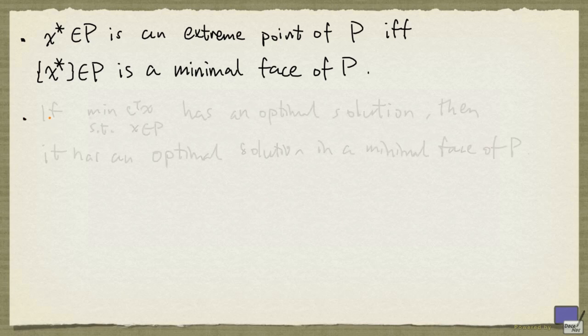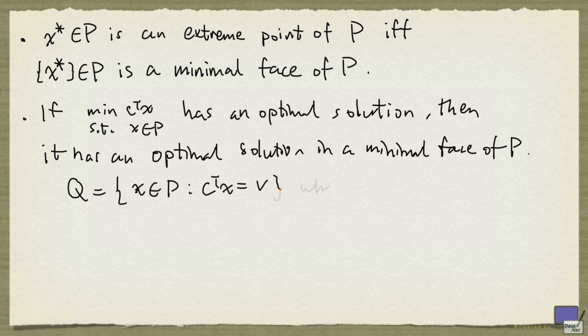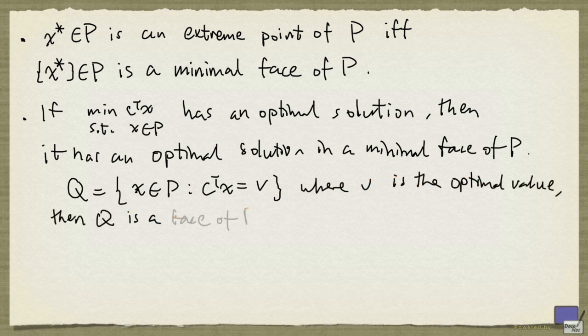The other fact is, if minimizing c^T x subject to x in P has an optimal solution, then it has an optimal solution in a minimal face of P. And the reason is very simple. If we take Q to be the set of x in P satisfying c^T x = v, where v is the optimal value, then Q is a face of P. But not only that, Q is the set of all optimal solutions to P.